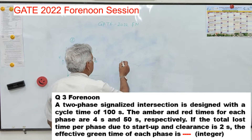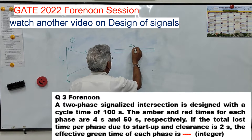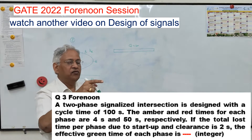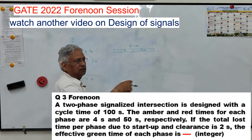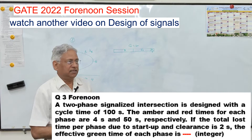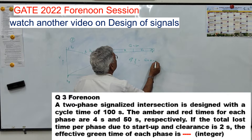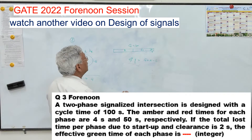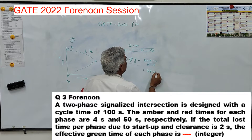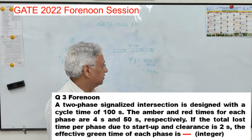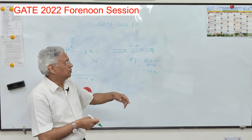The cycle is 100 seconds (C0). Red for each phase is 50 seconds. Effective green time equals green time plus amber time minus loss time. Green plus amber is 50 seconds, minus loss time of 2 seconds gives 48 seconds. Since both phases have the same green and red, the effective green time is 48 seconds, loss time is 2 seconds, red time is 50 seconds — totaling the 100-second cycle.